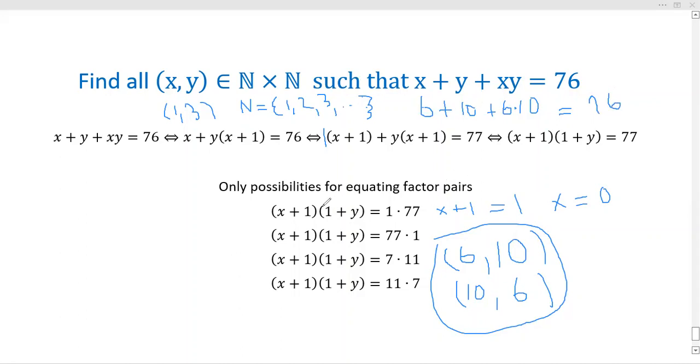That's it, hope you enjoyed. This is called completing the product, by the way. I've heard it called Simon's favorite factoring trick, but it's called completing the product in slightly more popular parlance - vernacular. You factor a bunch of terms into a product and that makes it easier to equate the factor pairs. This is called completing the product.